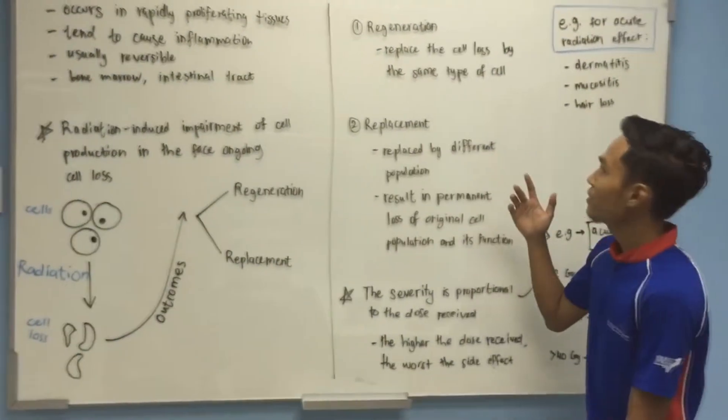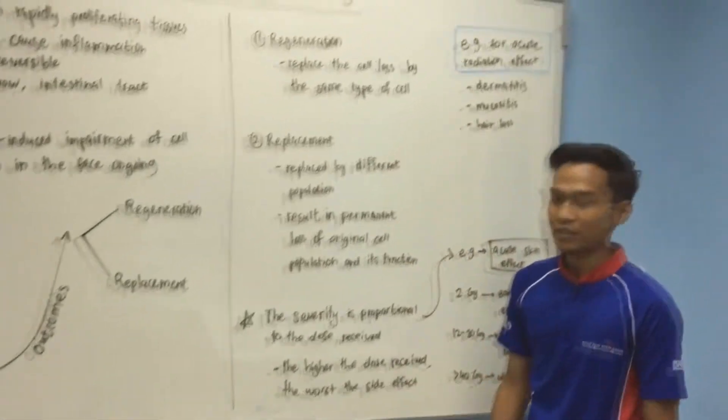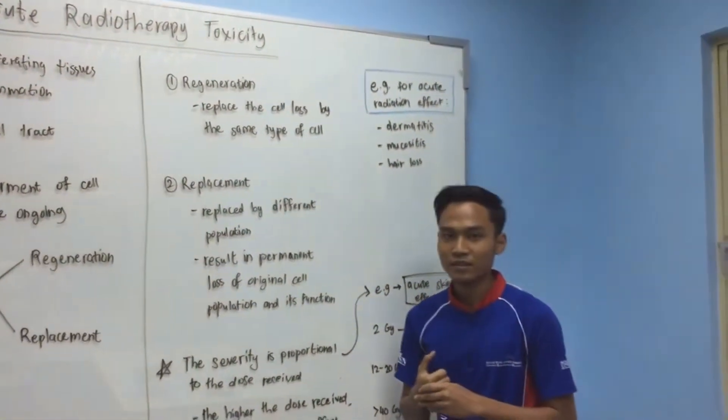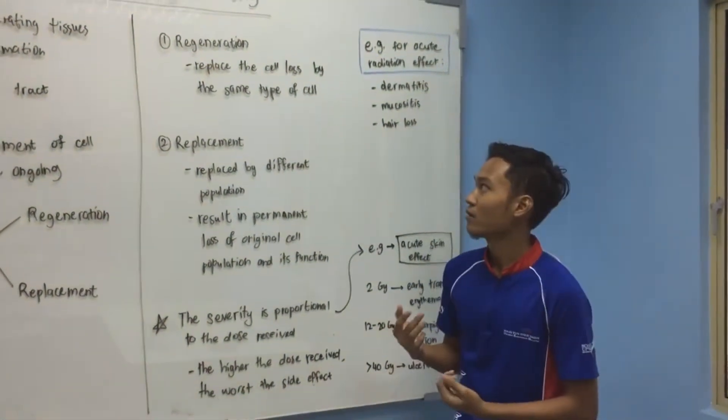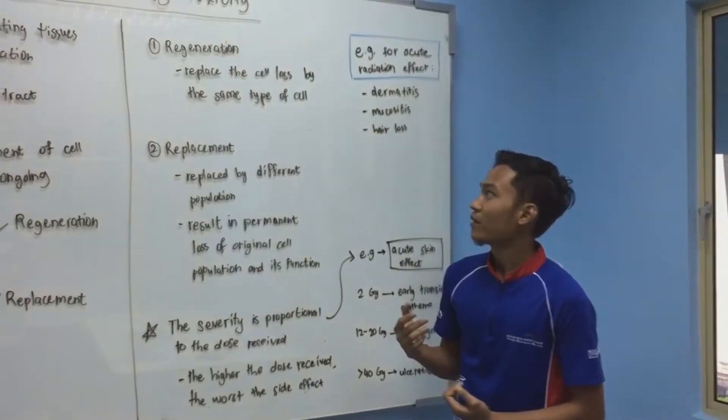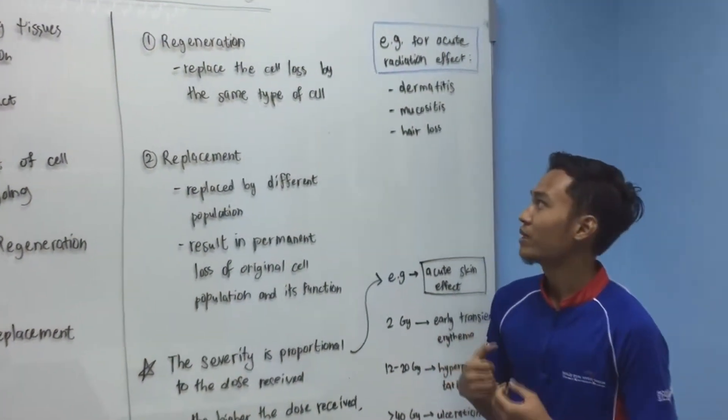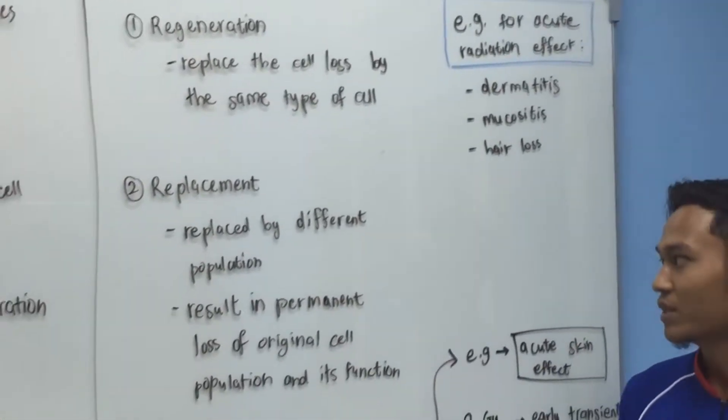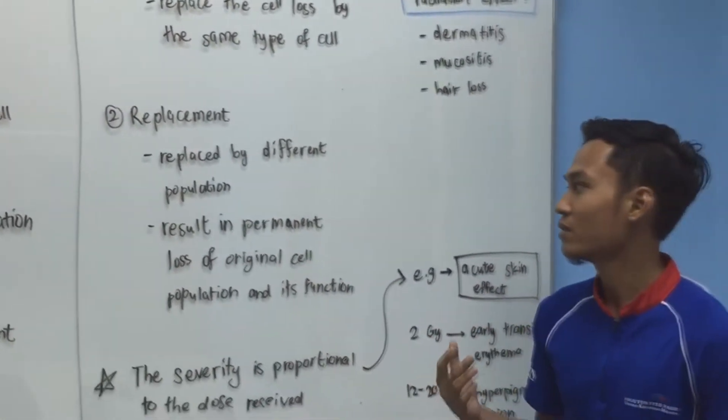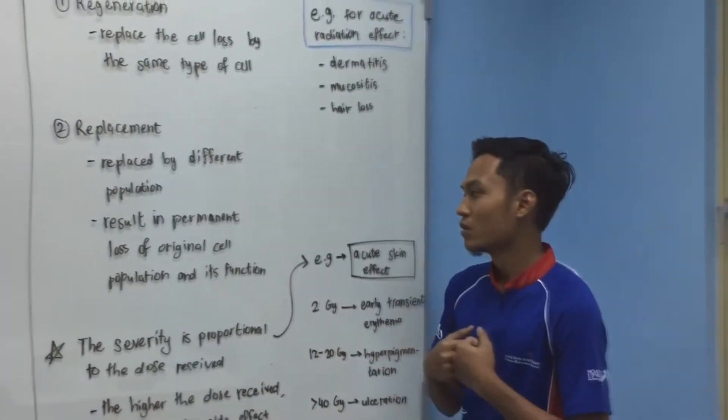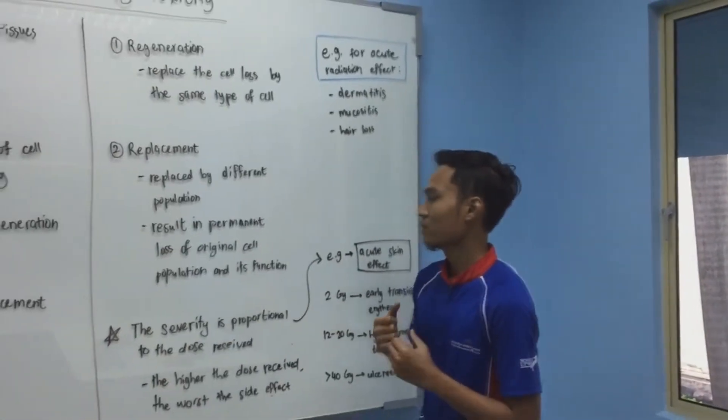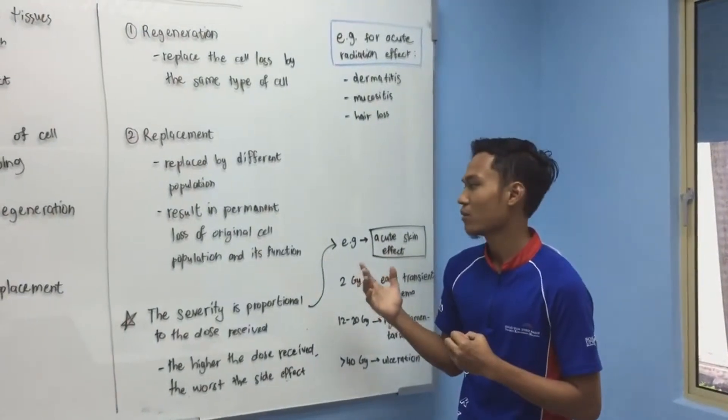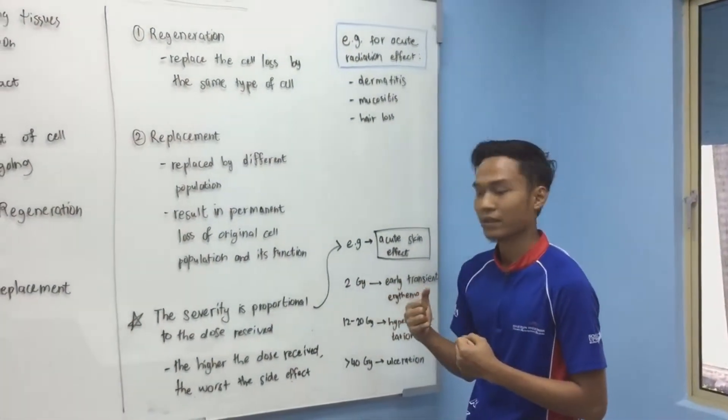First is regeneration, a process where the cell replaces the cell loss by the same type of cell. Second is replacement, where the cell loss is replaced by a different population. The result is permanent loss of the original cell population and its function.